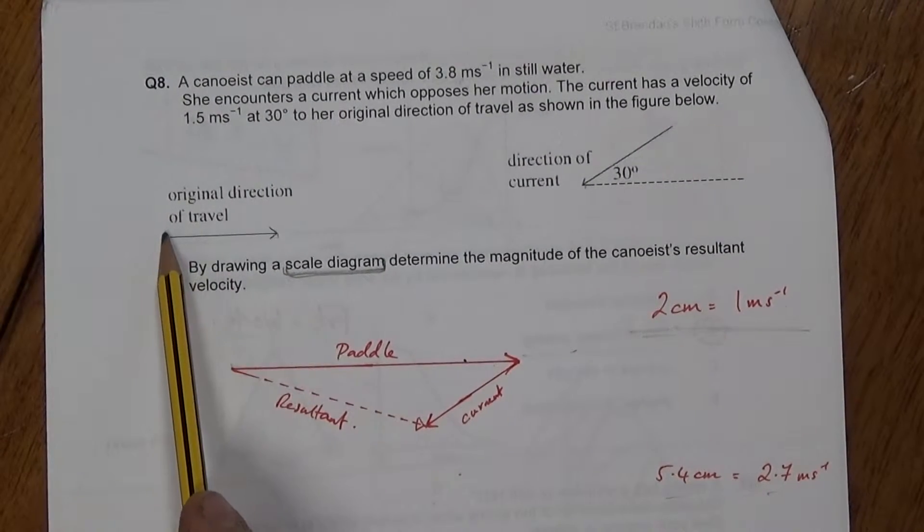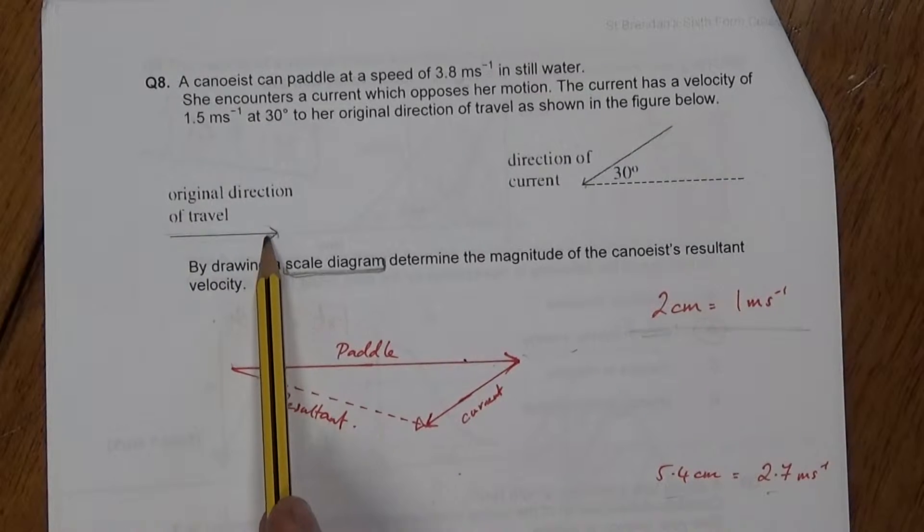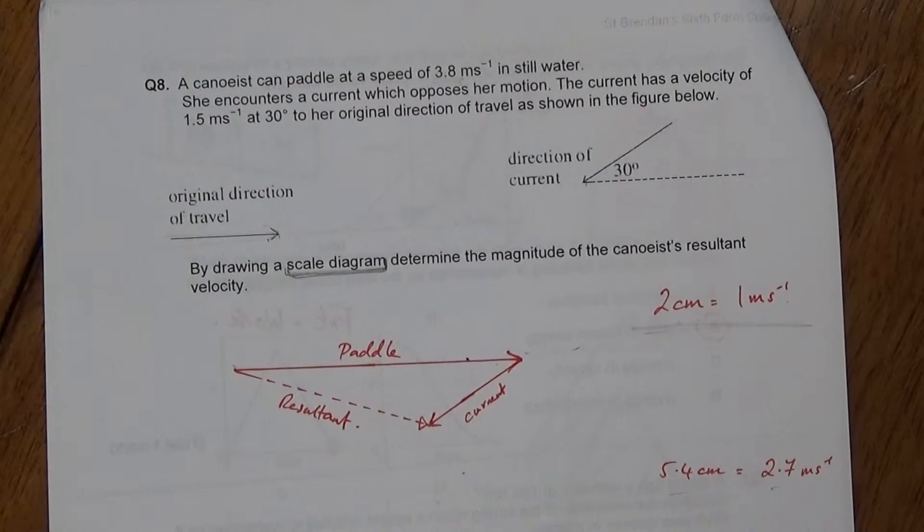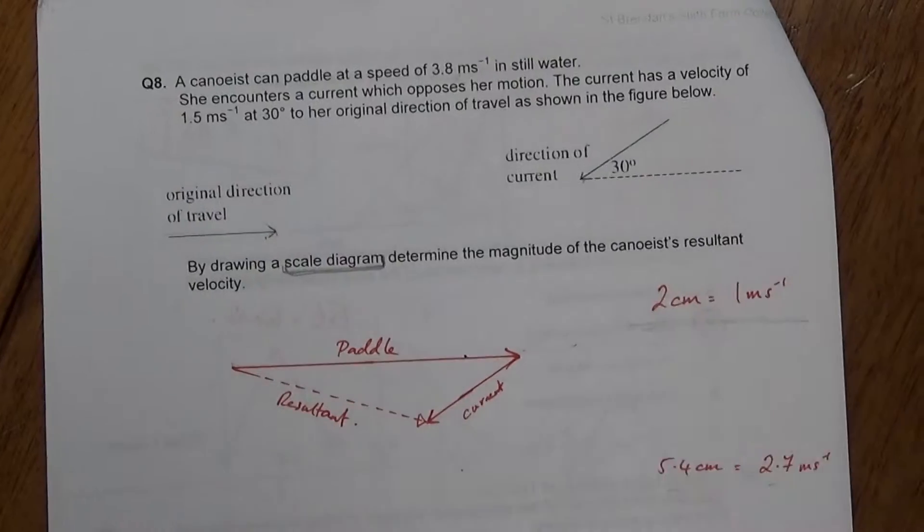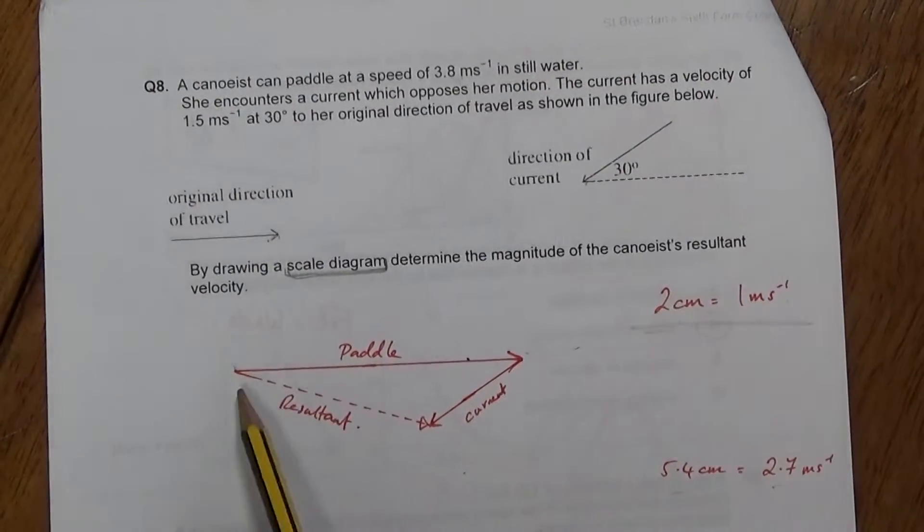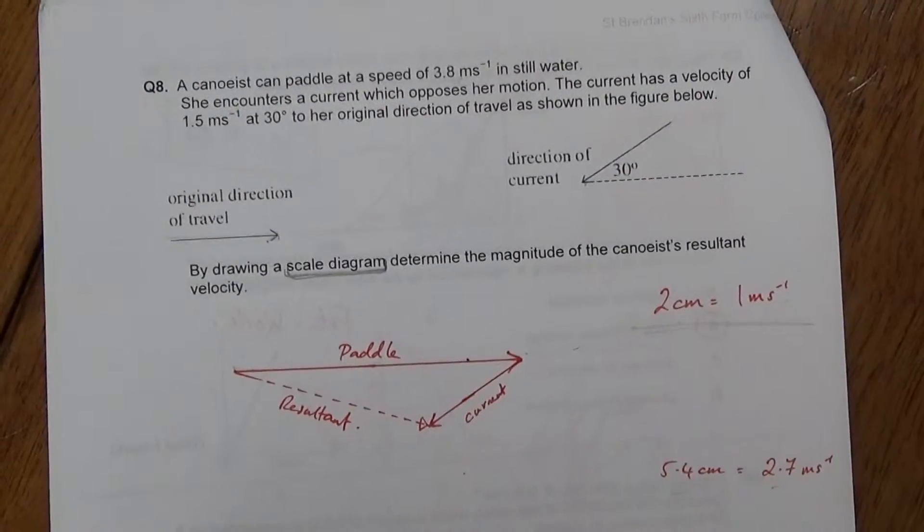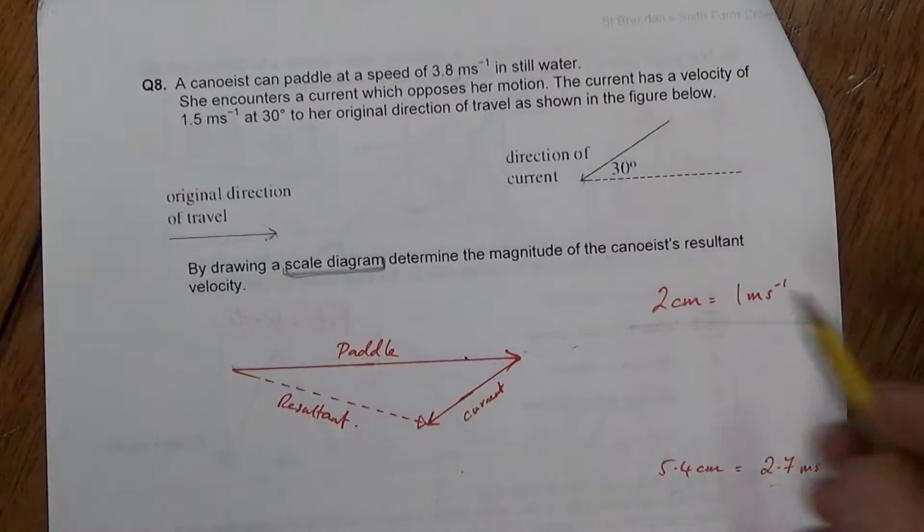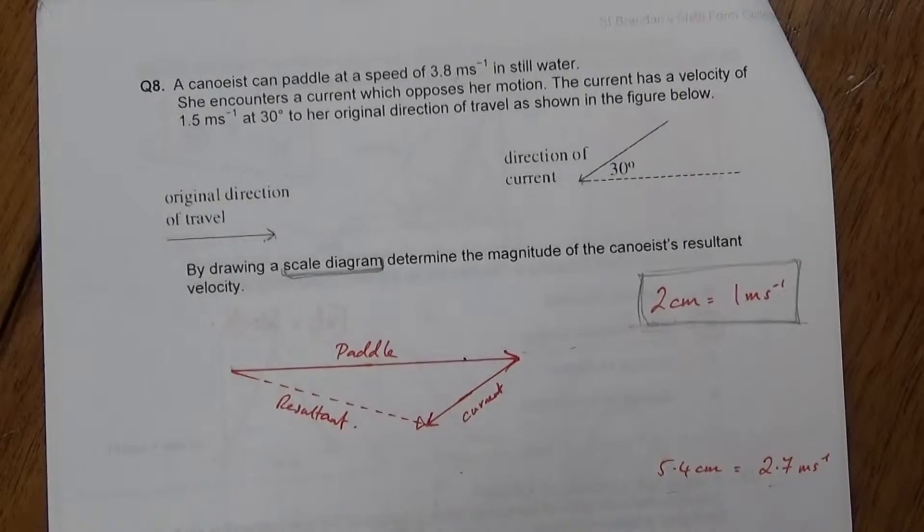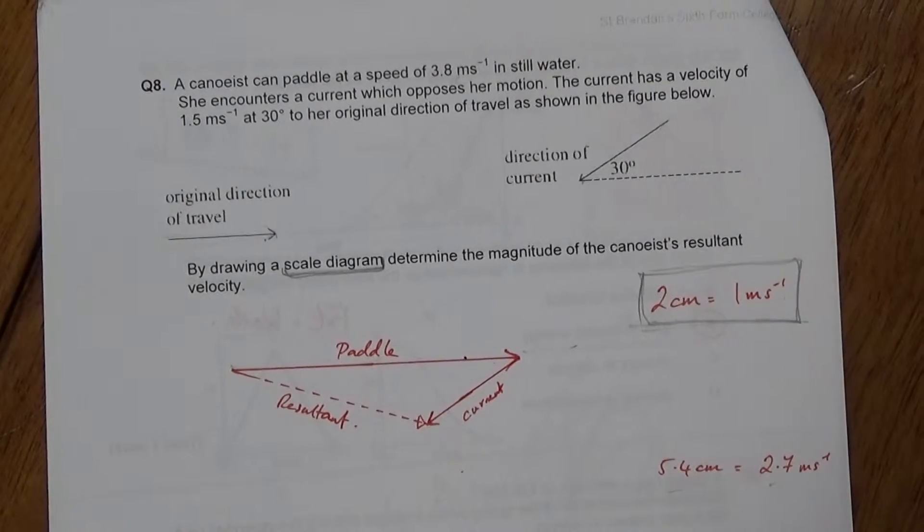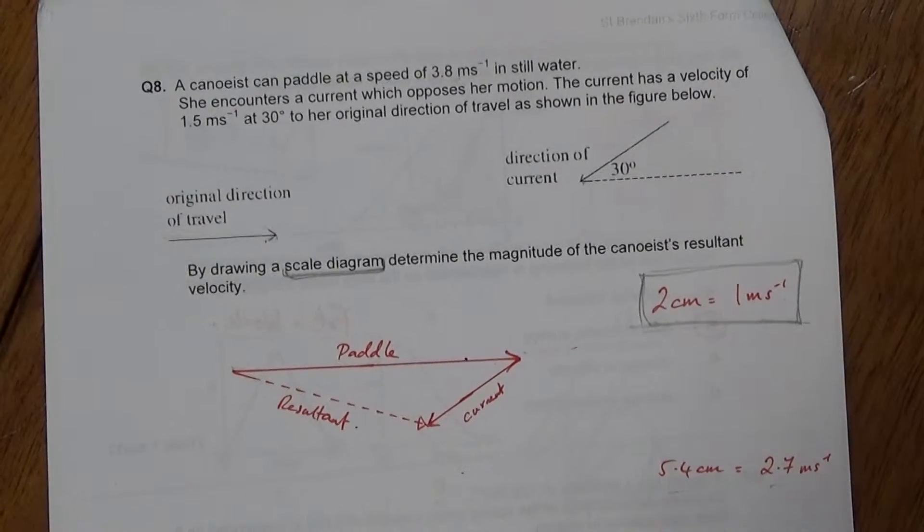We know the original direction of travel is from left to right because they show us an arrow. So you go and get your calculators, your rulers out and do this as we go through. Okay, we want to set a scale. When you've got a big space like this, you want a nice big scale. Okay, so the first mark was for using a scale that was bigger than one centimeter per meter per second.